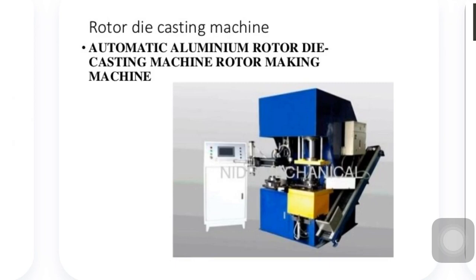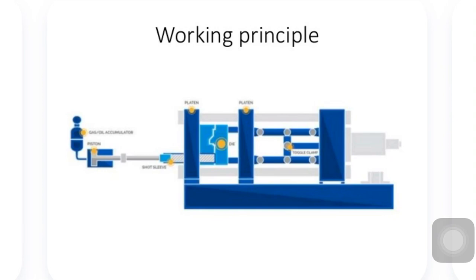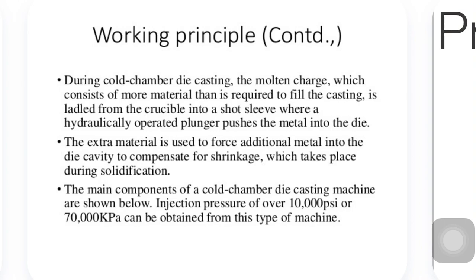One of the operations used in pressure die casting is the rotor die casting machine. This is a purely automatic aluminum rotor die casting machine which is used to make rotors, as you can see on your screen. The working principle: during cold chamber die casting, the molten metal is charged into the chamber.